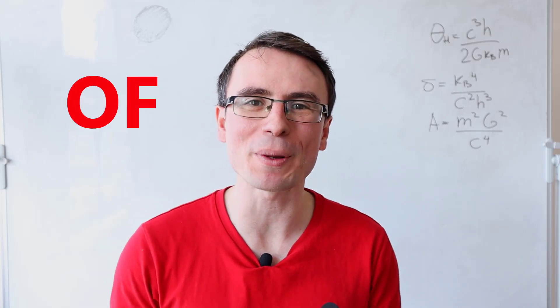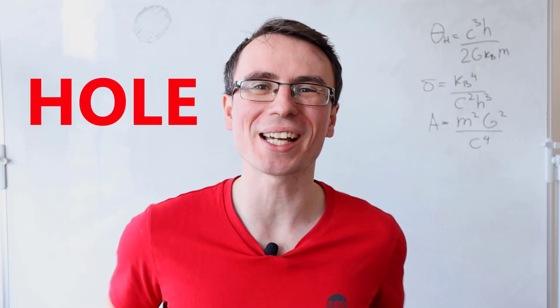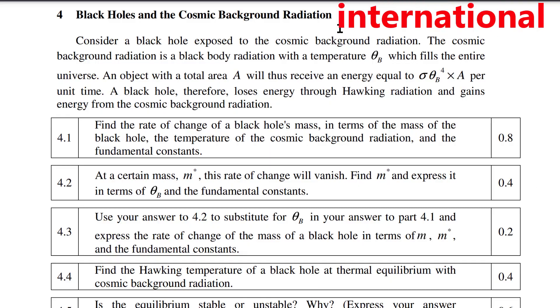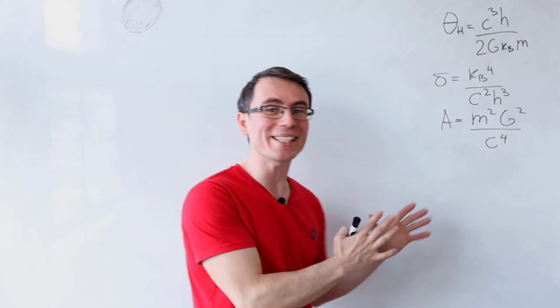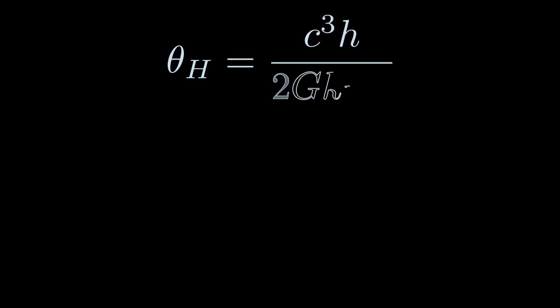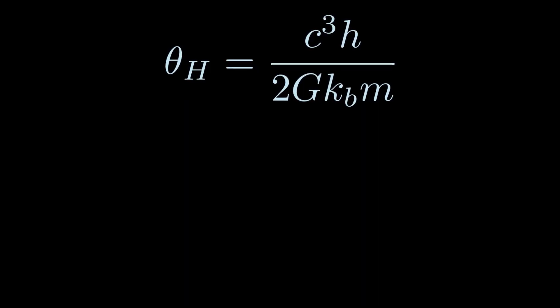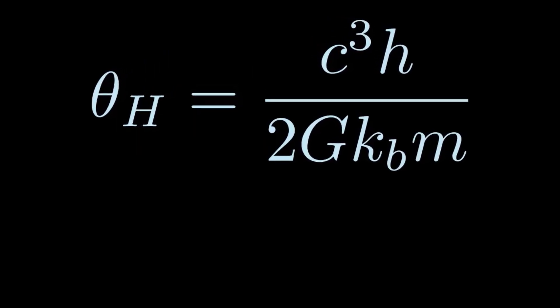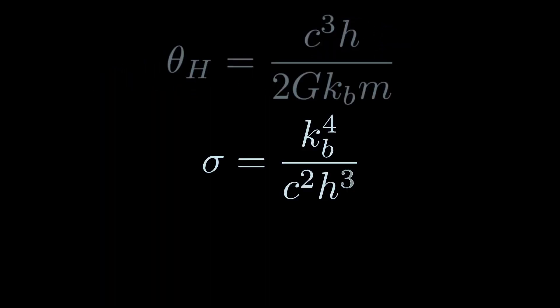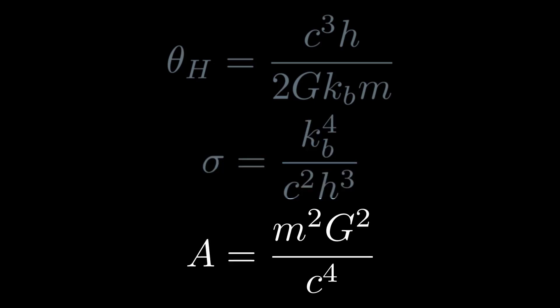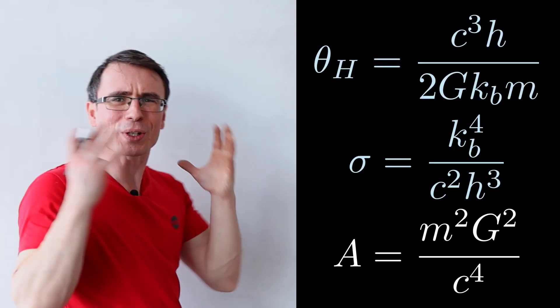Let's solve the last part of the black hole question from the International Physics Olympiad. We're going to be using the Hawking temperature of a black hole given by this expression, Stefan-Boltzmann's constant expressed in terms of fundamental constants, and the area of the event horizon of the black hole given by this.